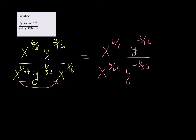And since we have like bases in the top and the bottom, we want to divide by subtracting the exponents. So 6 eighths minus 5 over 64 would give me x to the 43 over 64 power.